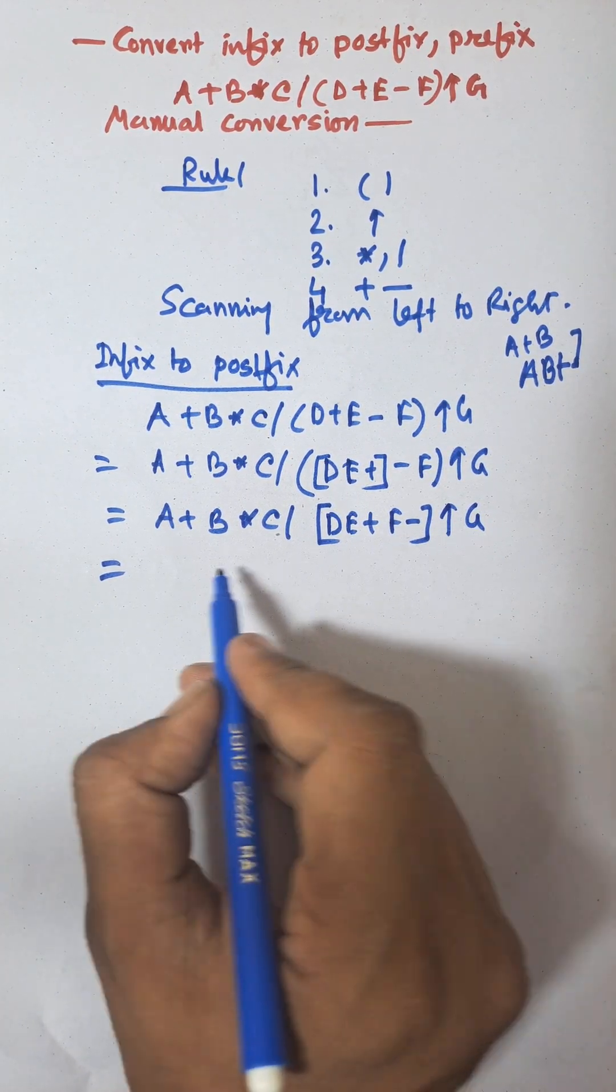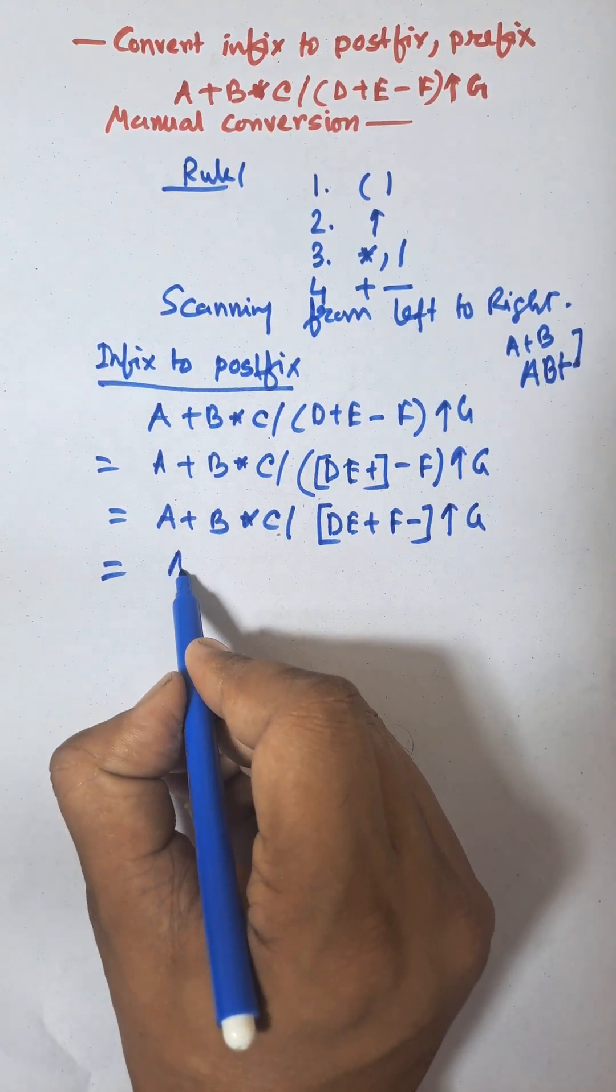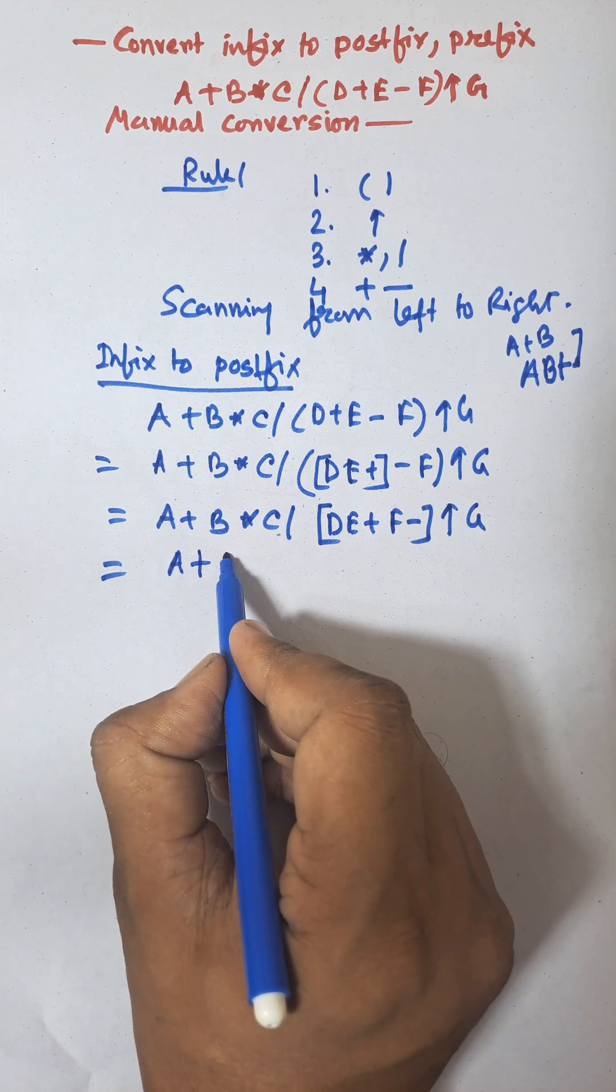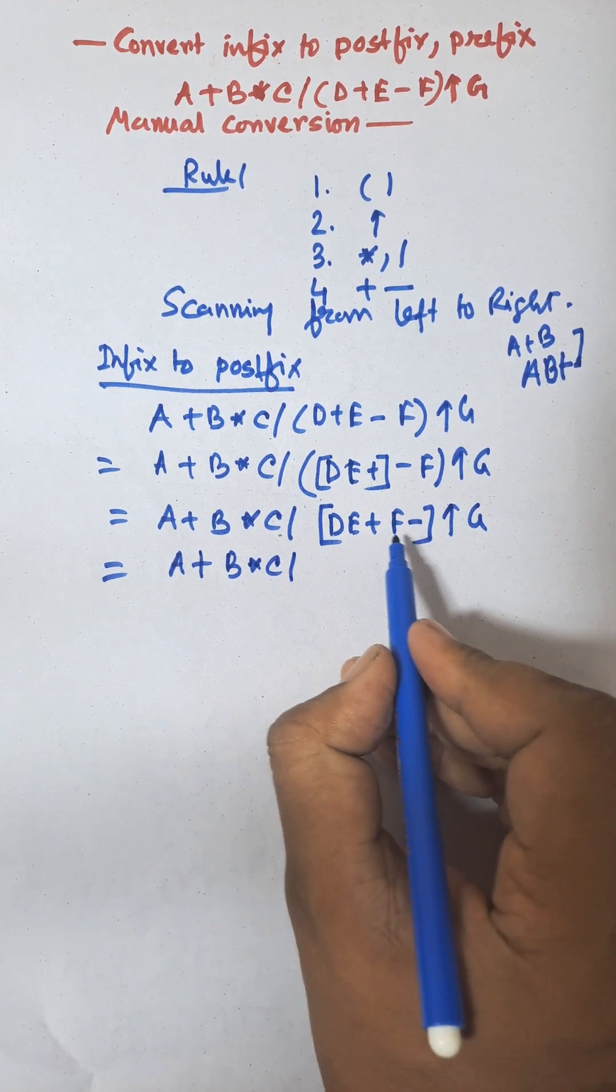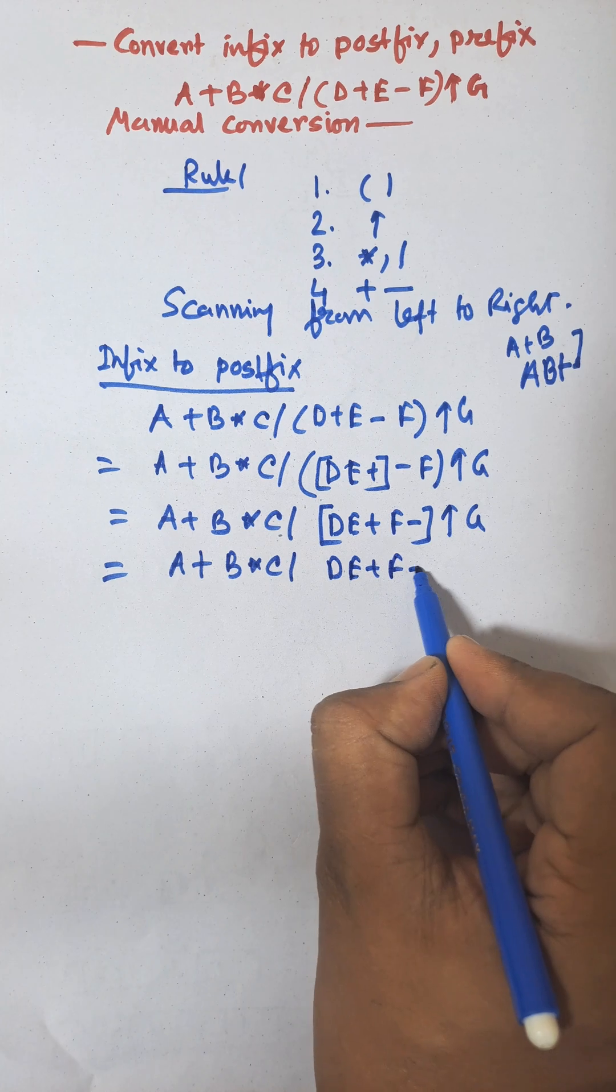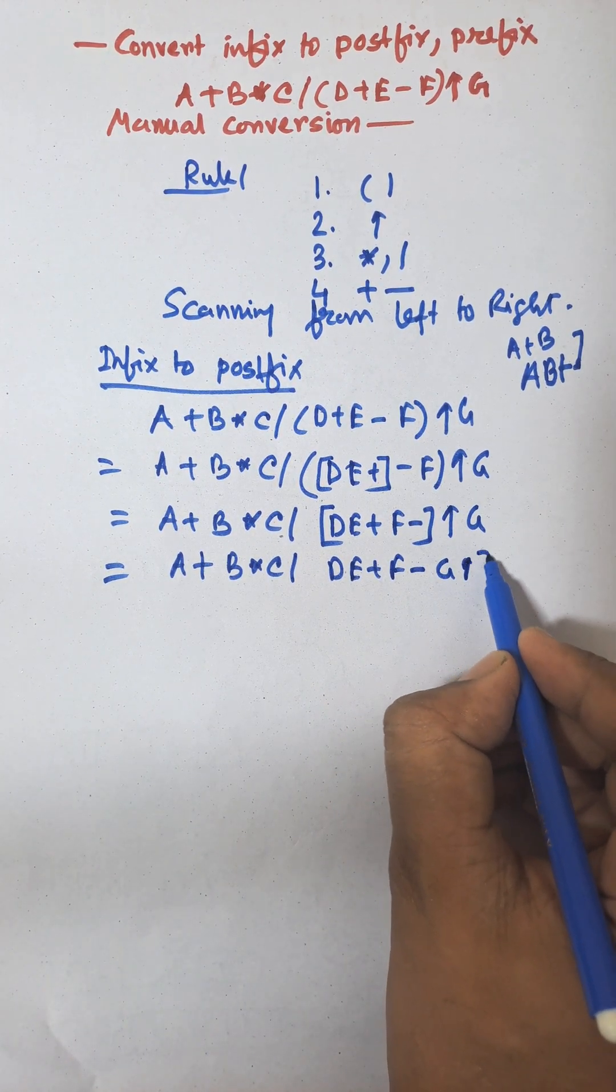Now we need to perform exponential because priority of the exponential is better than plus, into, and division. We need to perform D E plus F minus G exponential and lock.